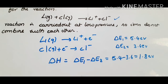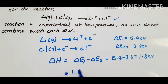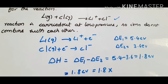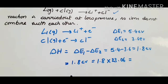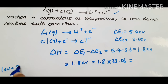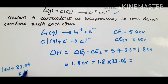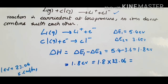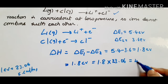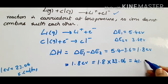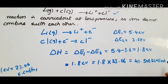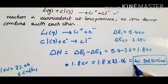Now convert 1.8 eV to kilocalories per mole using 1 eV = 23.06 kcal/mol: 1.8 × 23.06 = 41.508 kcal/mol. This is the answer.